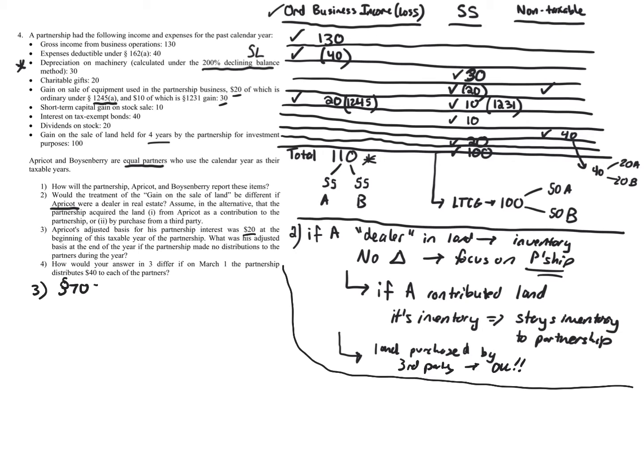On formation or contribution, you carry over your basis under Sections 721, 722, and 723 — the formation contribution rules. But this question asks: after operations, what happens to your basis? Section 705 says we start with our beginning outside adjusted basis.